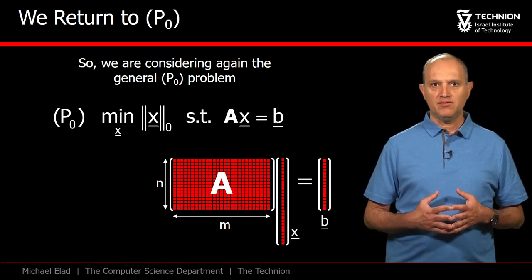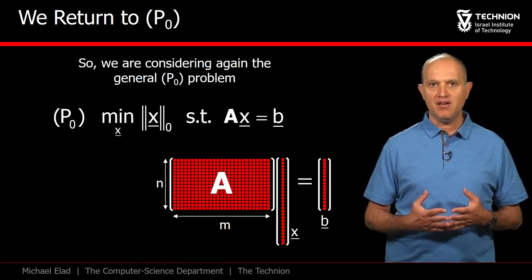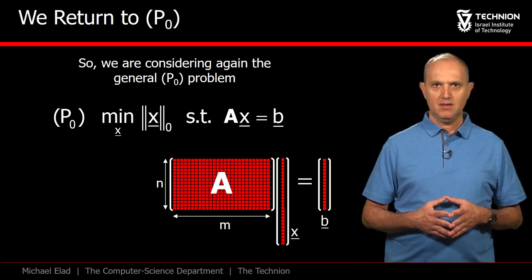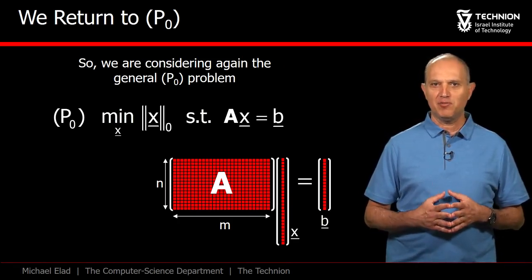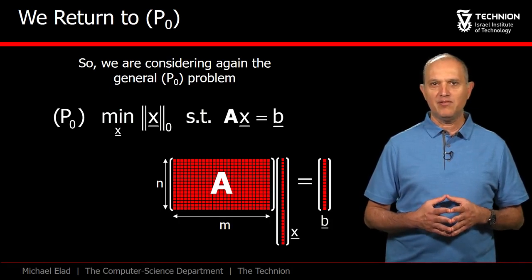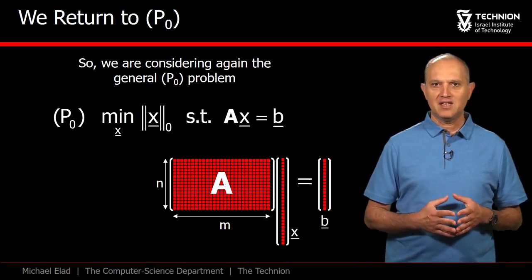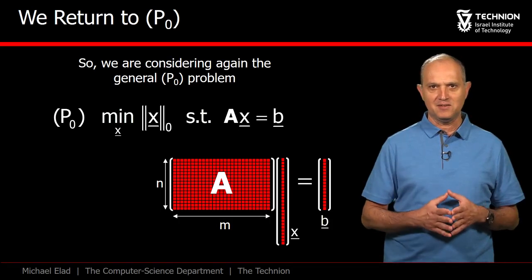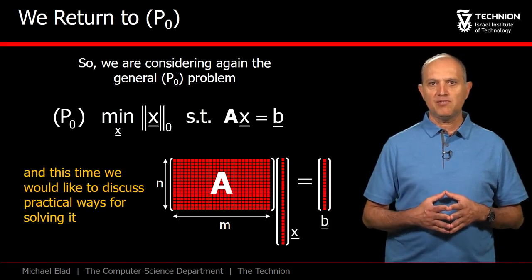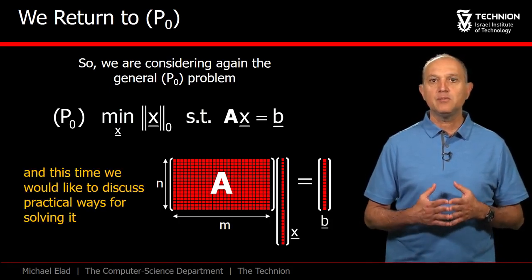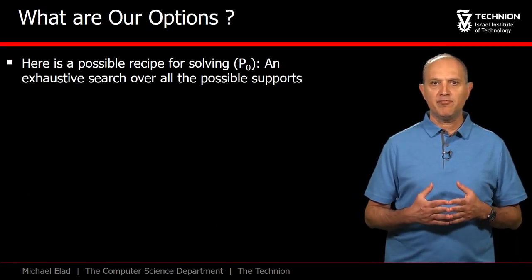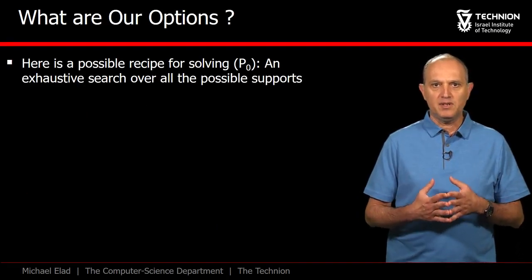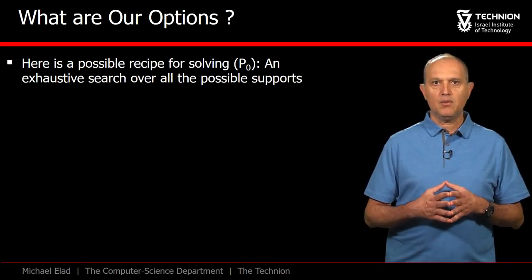We start by defining our objective and describing the directions we have in front of us. This is probably the 1,000th time we see the definition of P0. This is the problem we have defined as our objective, seeking the sparse solution of a linear system. Our dream is to solve it somehow and do this in reasonable time. We already described an exhaustive method that could solve P0 in practice. Let's recall how this method works.